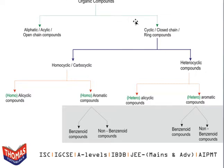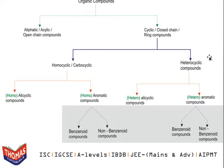The second classification is cyclic, closed chain, or ring compounds. These are compounds in which carbon atoms are joined to form one or more rings. They are further classified as homocyclic, which is carbocyclic, or heterocyclic. In homocyclic compounds, the ring is made up of only carbon atoms. In heterocyclic compounds, there is an inclusion of at least one heteroatom — a non-carbon atom — which could be oxygen, nitrogen, or sulfur.